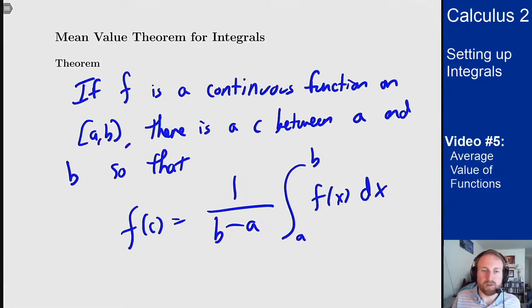All right, so here's our statement here. If f is a continuous function on the interval from a to b, there is a point c between a and b so that f of c equals the average value of f on that interval. And you can think of this sort of in a couple different ways.